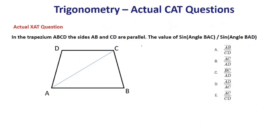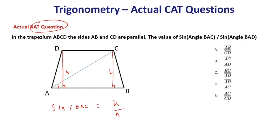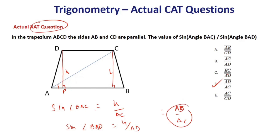CAT Question: In trapezium ABCD, sides AB and CD are parallel. Find the ratio of sin(∠BAC) to sin(∠BAD). Drop a height h from B. sin(∠BAC) = h/AC and sin(∠BAD) = h/AD. Dividing: sin(∠BAC)/sin(∠BAD) = AD/AC. The answer is option D.